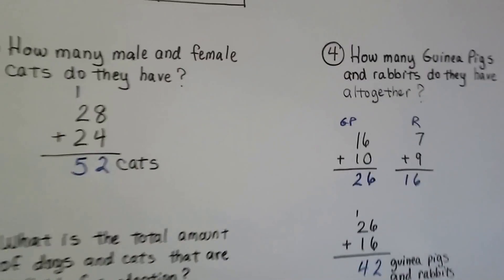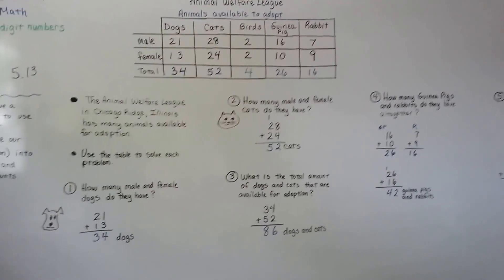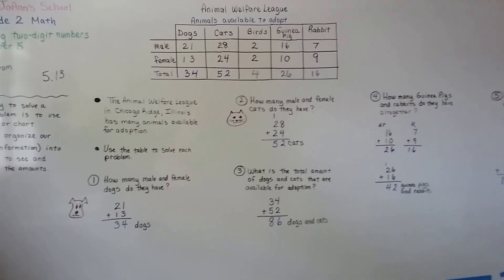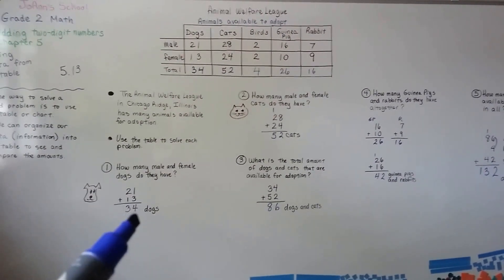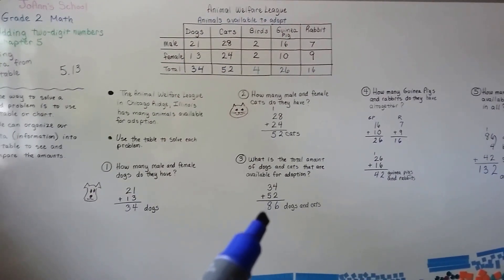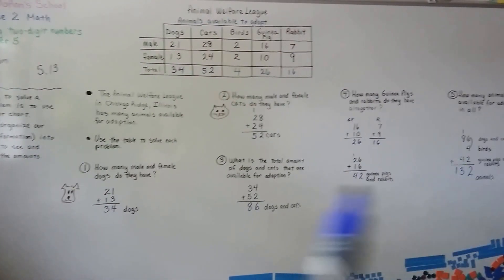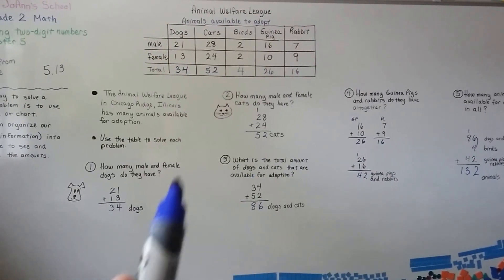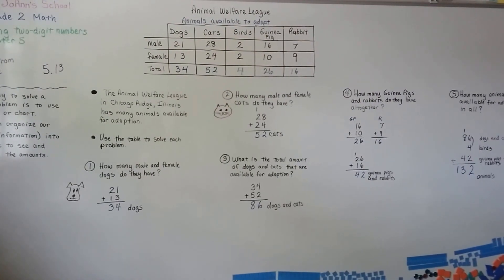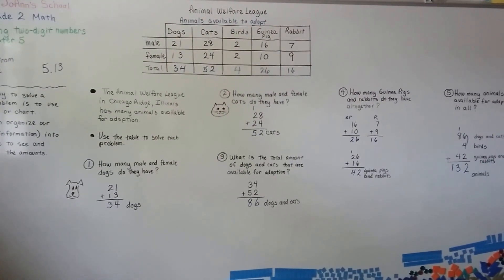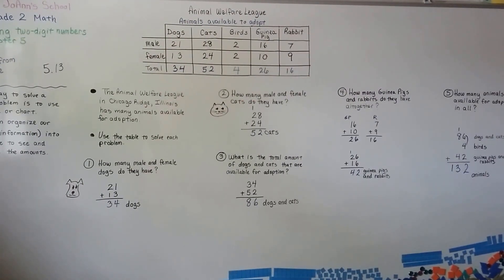You can use a table to see information, compare it, and add sums. You can also use information you already found to answer another question, like we did with the dogs and cats totals. We're almost done with chapter five — we'll continue with one more video for chapter five, and I'll see you there.